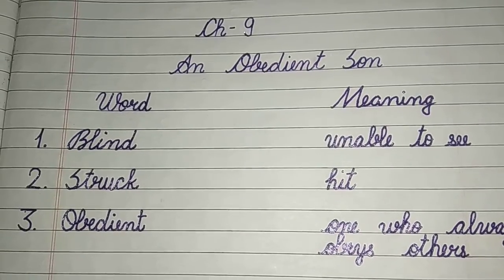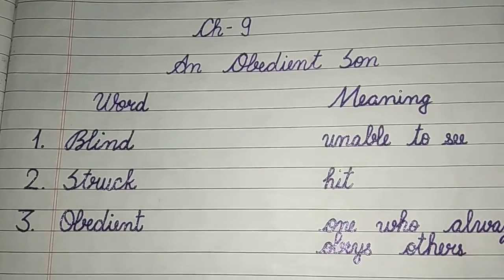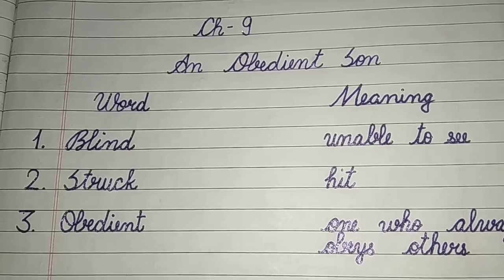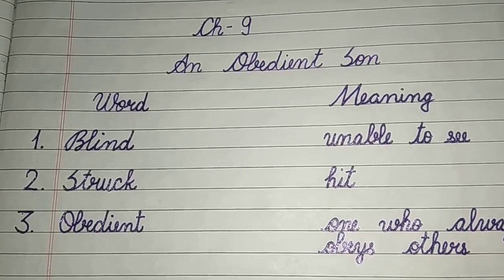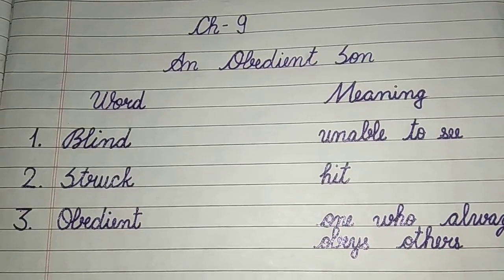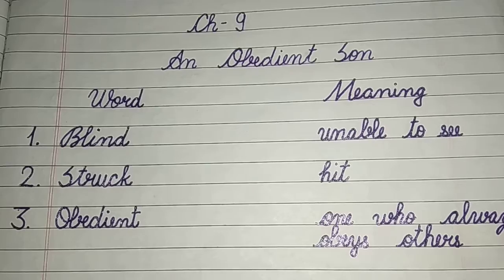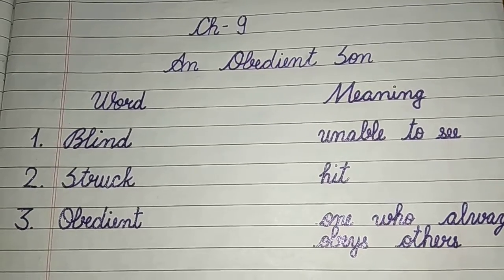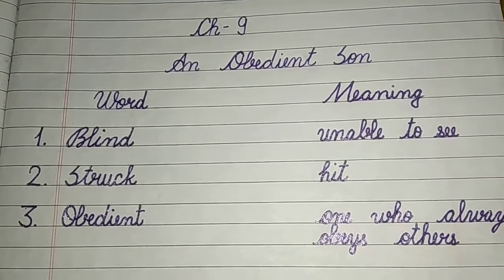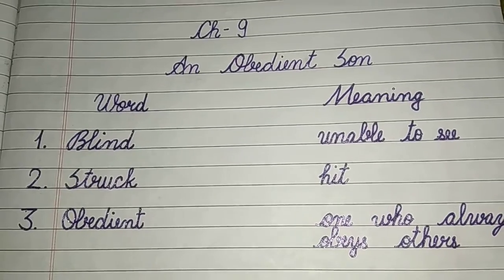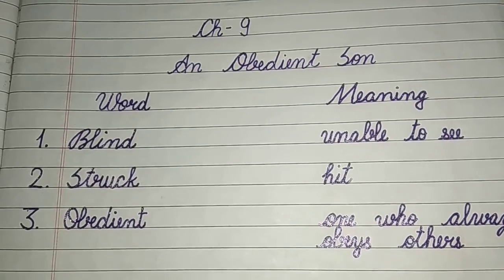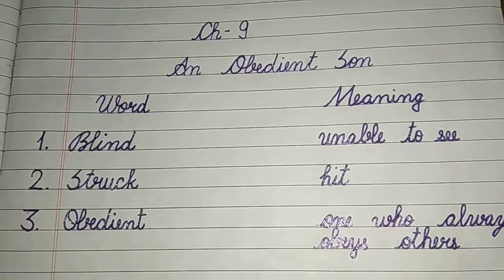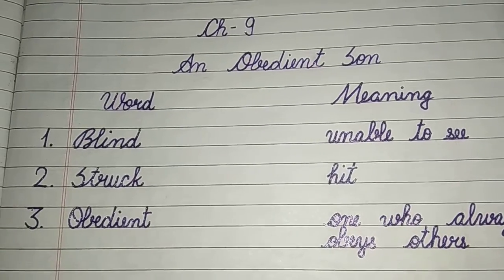Hello SGTB students. I am Jaspreet from Shri Guru Tegh Bahadur School NH9, Dhingroar Sirsa. Today we will revise word meaning and book work of chapter 9. The name of the chapter is 'An Obedient Son', means Ek Aagekari Beta.